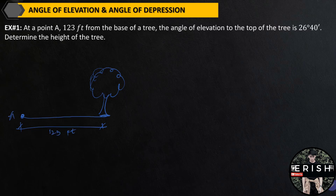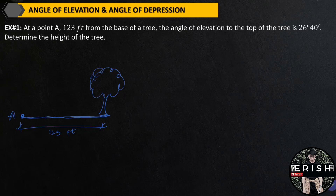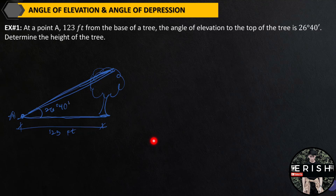We need to label correctly. The angle of elevation to the top of the tree is 26 degrees 40 minutes. The angle of elevation is the angle above the horizontal line. This is the horizontal line. Our line of sight goes up to the top of the tree. The angle of elevation is 26 degrees 40 minutes. The question: determine the height of the tree.